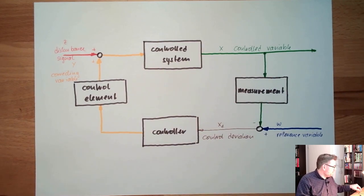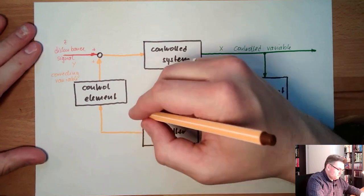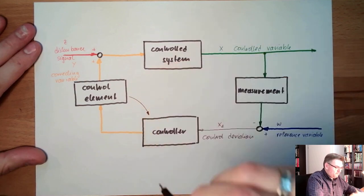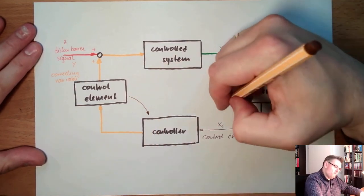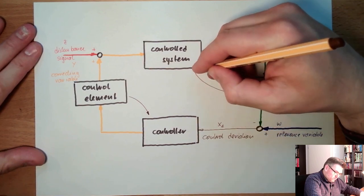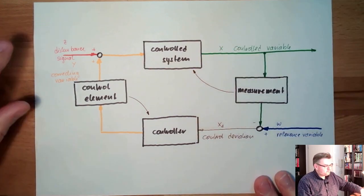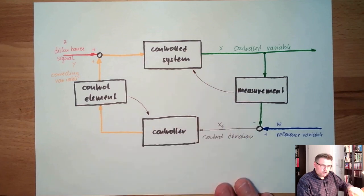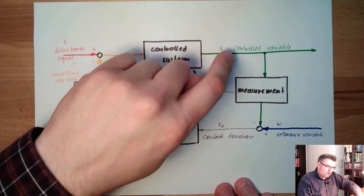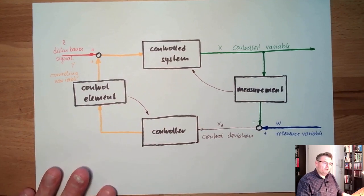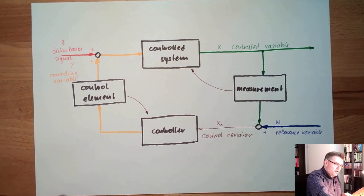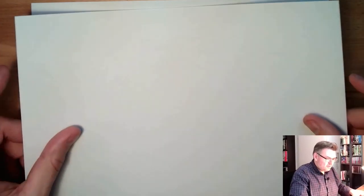To make it a little bit easier, we will assume that the control element is part of the controller, and the measurement is part of the control system. So the control element is part of the controller, and the measurement is good enough that the controlled variable and the measured controlled variable are pretty much the same. It then comes down to a simplified diagram.